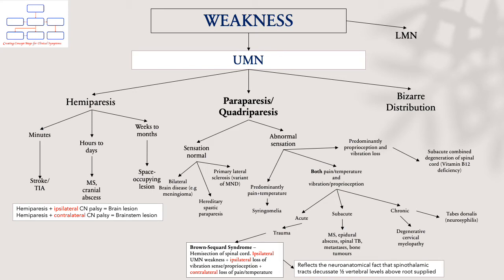In paraparesis or quadriplegia with affected sensation, ask yourself what aspects of sensation are predominantly affected. If pain and temperature are predominantly affected, this will point towards your spinothalamic tracts — specifically towards syringomyelia, which is a fluid-filled cavity that develops in your spinal cord, most often without a clear cause, though sometimes from trauma — and it commonly affects your spinothalamic tracts.